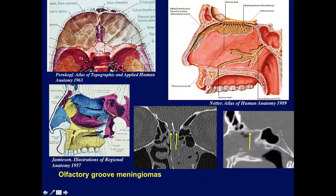On the coronal CT scan we see the crista galli and the region of the cribriform plate. On the sagittal CT, the cribriform plate appears indistinct because of all the olfactory nerve fibers crossing through. Behind it is the planum sphenoidale and the tuberculum sellae. On this diagram we see the olfactory tract and olfactory bulb, with all the olfactory fibers crossing through the cribriform plate.